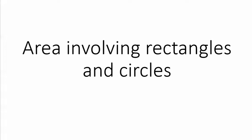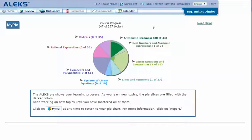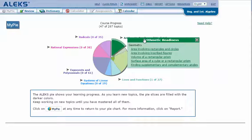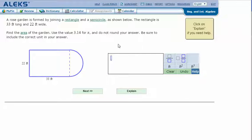Area involving rectangles and circles in ALEKS. Mouse over the green slice 'Arithmetic Readiness' to reveal the dropdown list of topics you need to cover. Click on 'Area involving rectangles and circles'.